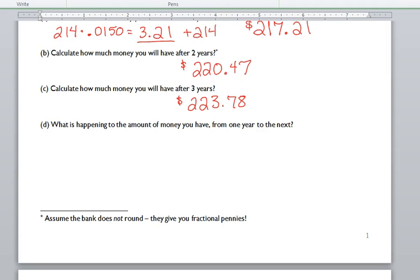Okay, so you should have gotten, after two years, that you have $220.47. After three years, you have $223.78. Now, part D there says, what is happening to the amount of money you have from one year to the next? So, just in one word, what's happening?